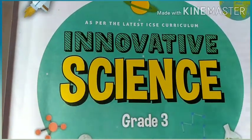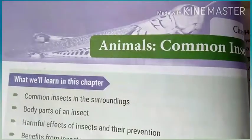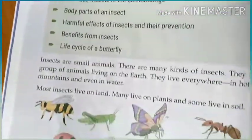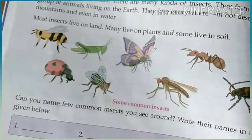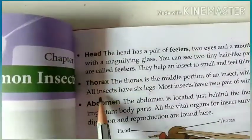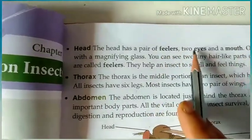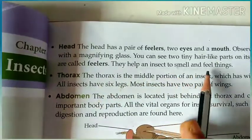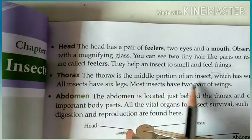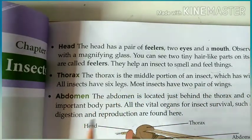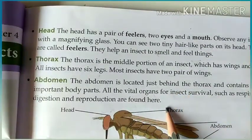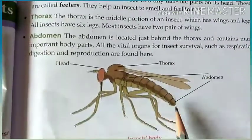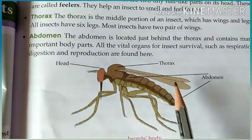Before starting the new chapter, let me revise the old portion. We have studied that there are different types of insects found on Earth, and mostly insects live on land. There are three parts of insects: head, thorax, and abdomen. The head has two feelers, two eyes, and one mouth. Feelers help the insect to smell and feel things. The thorax is the middle portion, which has wings and legs. Most insects have six legs. The abdomen is located behind the thorax and contains all the important organs.